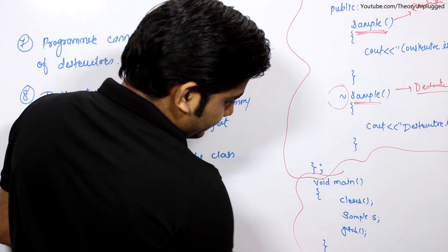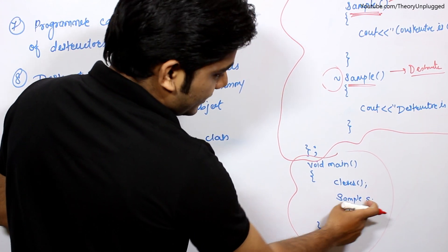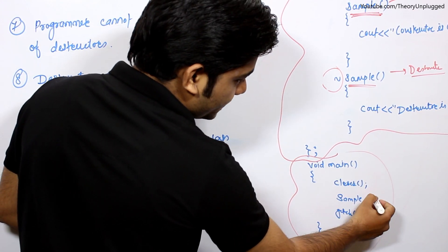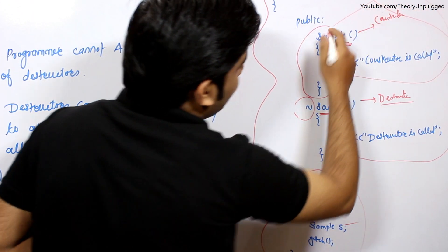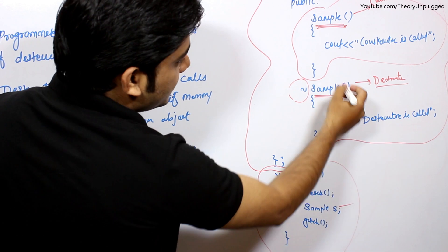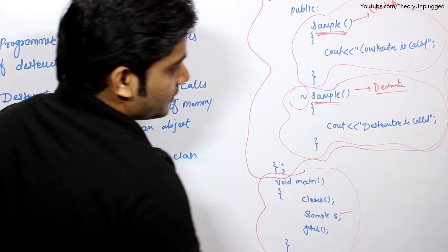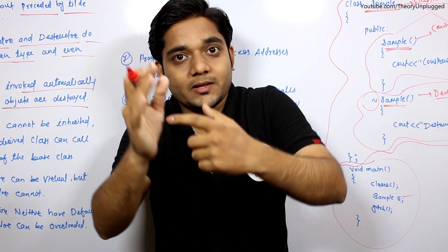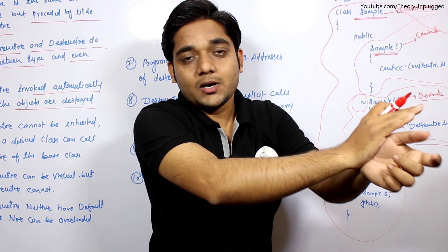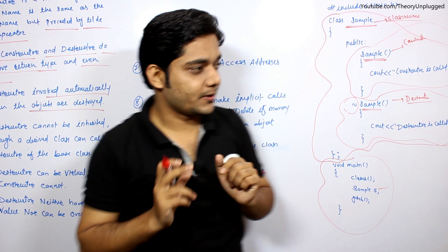Let's see, this is my void main. I created an object sample s. So when the object is created, first my constructor will run, and when the object is destroyed, at that time my destructor will run. When the class object is created, constructor runs, and when the class object is destroyed, destructor is called.